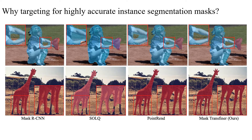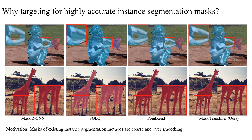In this work, we tackle the problem of high-quality instance segmentation with detail-preserving masks. Methods based on Mask RCNN and more recently Transformer have achieved ever-increasing performance. However, as shown in the figure, their predicted masks are still very coarse and not accurate enough.